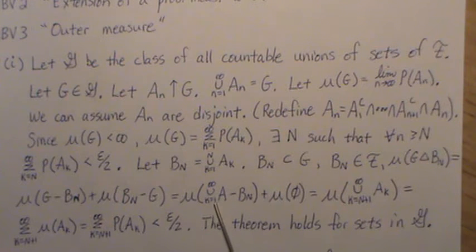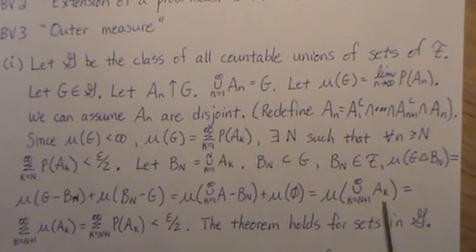The measure of, if we take K equals 1 to infinity and subtract off 1 to capital N, then we're really dealing with the measure in that tail. So it's K equals N plus 1 to infinity of A_k.